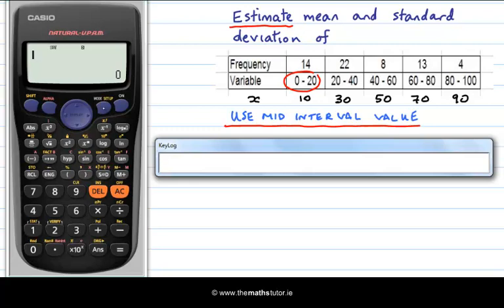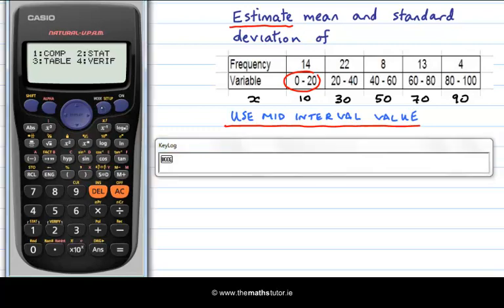First of all I'll enter my data. So we go mode 2, 1 and now you can see we enter our data so for our x value we hit 10 and then equals and we can scroll across and enter our frequency as 14 and then equals.